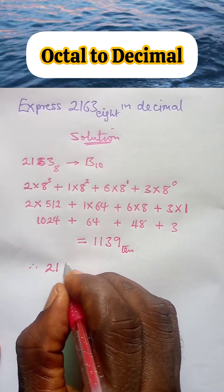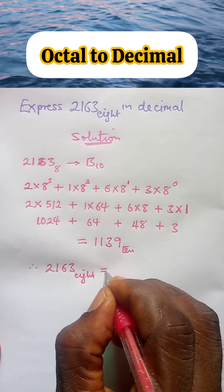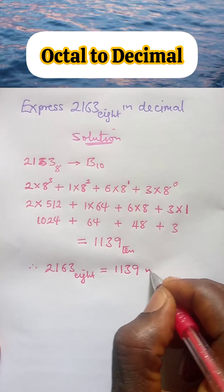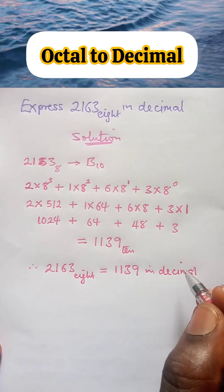Therefore, 2163 base 8 equals 1139 in decimal. Thank you for watching.